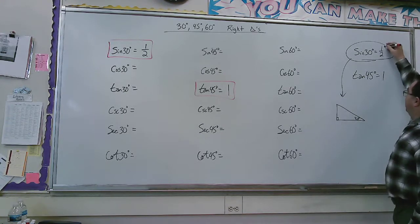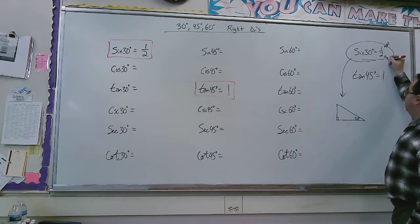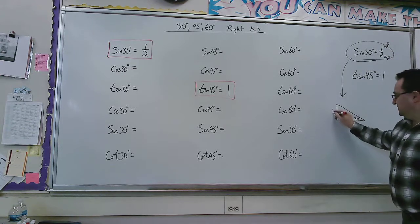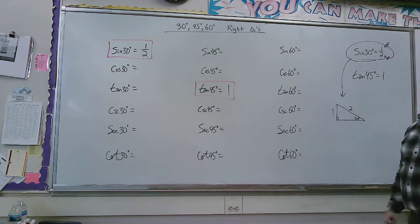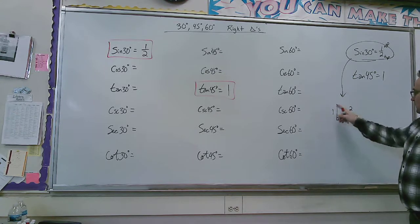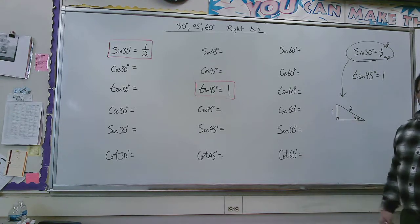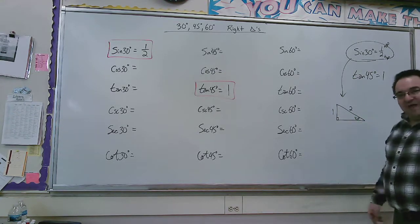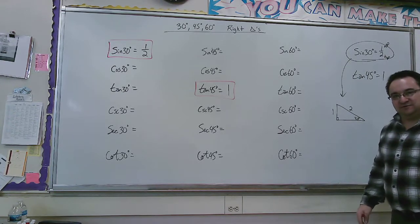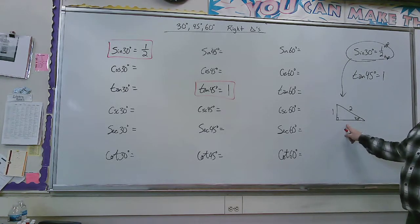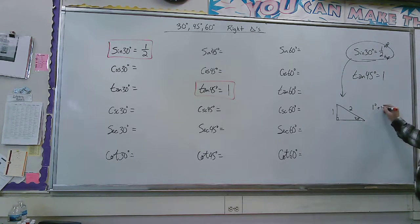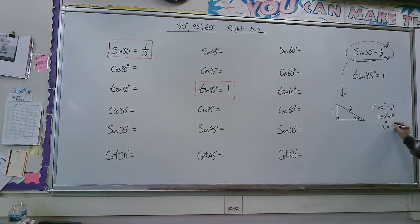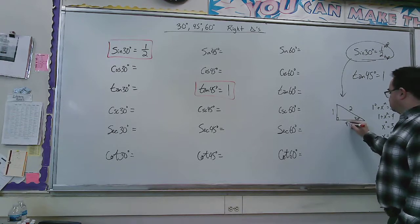Now, sine is opposite over hypotenuse. So, that means this would be one, and this would be two. Well, look. All I've got to do is use the Pythagorean theorem, and I don't have to memorize the other side. I can calculate the other side. Let's just call this x for now. One squared plus x squared is two squared. So, one plus x squared is four. X squared is three. So, x is the square root of three.